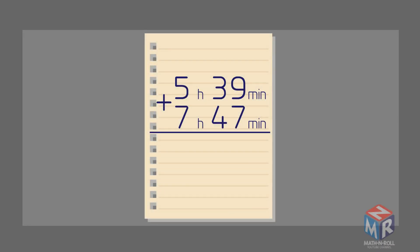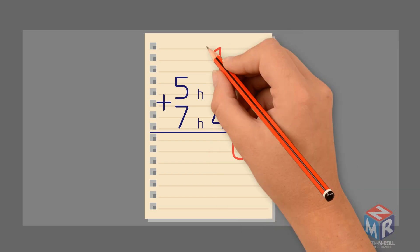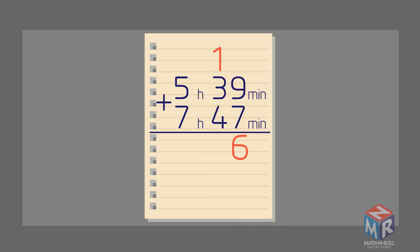Let's try another one. 9 plus 7 equals 16. So we need to write the 6, carry over the 1, and then we need to add 1 plus 3 plus 4, which equals 8. So we have 86 minutes.